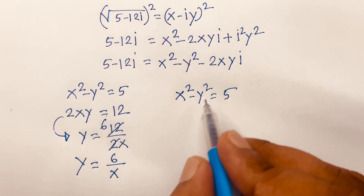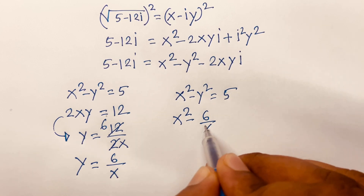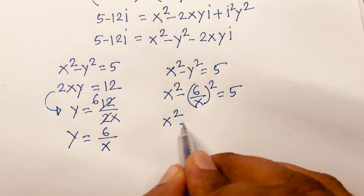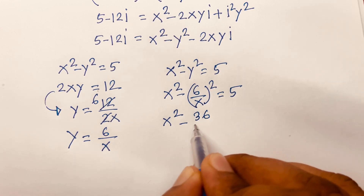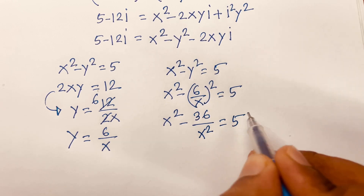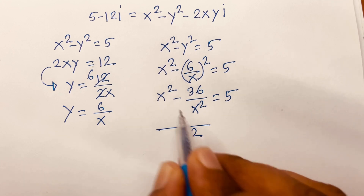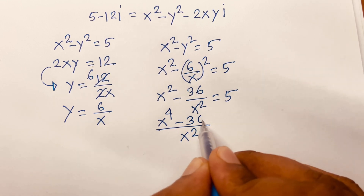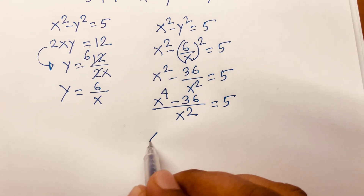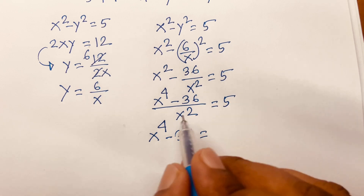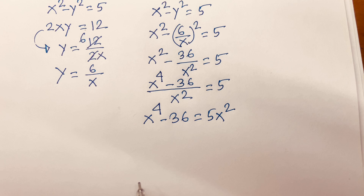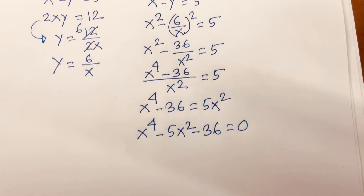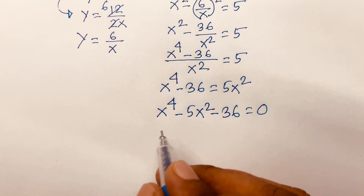Substituting y equals 6 over x into x squared minus y squared equals 5, we get x squared minus (6/x) squared equals 5, so x squared minus 36 over x squared equals 5. Multiplying through by x squared gives x to the power 4 minus 36 equals 5x squared, so x to the power 4 minus 5x squared minus 36 equals 0.